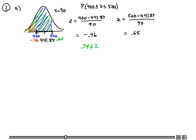If I look up the negative 0.46, I'm going to get a 0.3228. And what I want to do to get the blue area that I want, I'm going to subtract those two. And subtracting those two, I get 0.4194. Or approximately 42% earned between $400 and $500. So that is part A.